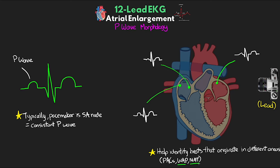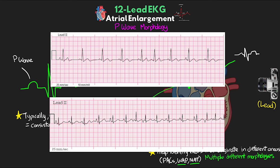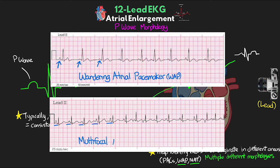With the wandering atrial pacemaker and multifocal atrial tachycardia, we generally see multiple different P-wave morphologies resulting from many irritated areas of the atria initializing depolarization. In the top example, we have a normal rate but multiple P-wave morphologies — this is wandering atrial pacemaker. In the bottom example, we have the same multiple morphologies but a tachycardic rate, making it multifocal atrial tachycardia.